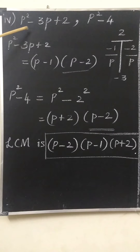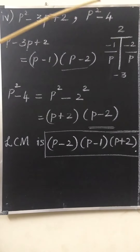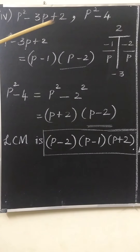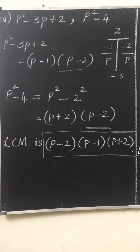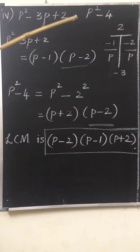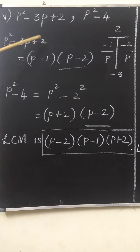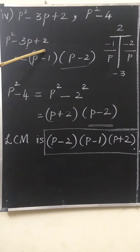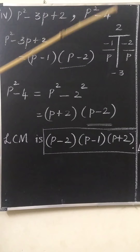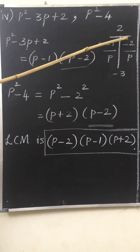Look at the fourth sum. Two polynomials are given: p² − 3p + 2 and p² − 4. Their degree is 2, therefore these are quadratic polynomials. The quadratic polynomials should be factorized first. For p² − 3p + 2, we select two numbers whose product is 2 and sum is −3: those are −1 and −2. So it factorizes as (p − 1)(p − 2).